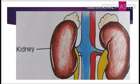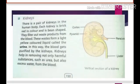Our kidneys are brick red in color and are present on both sides of the vertebral column. Our urinary system has a pair of kidneys. Each kidney is brick red in color and bean shaped. They filter out waste products from the blood, and the waste forms a yellow colored liquid called urine. In this way, the blood gets purified by the kidneys.